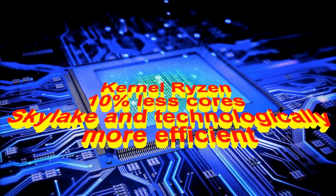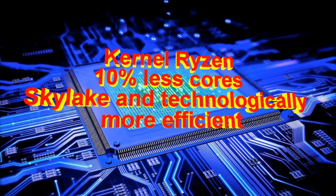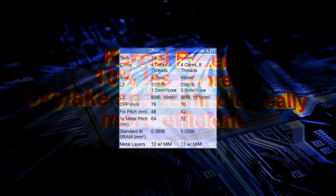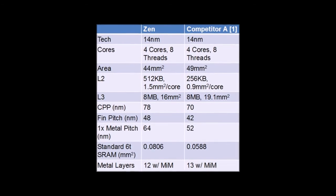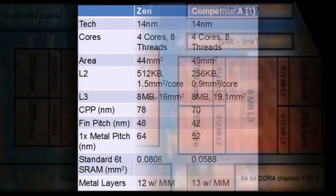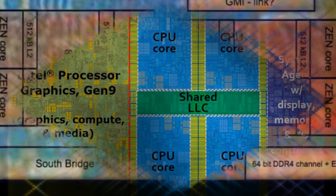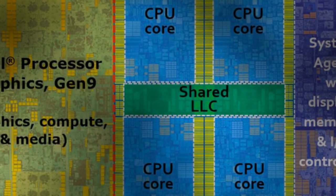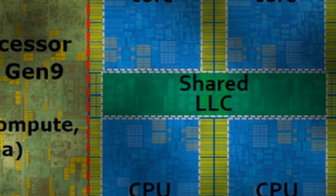The AMD Zen core is about 10% less coarse than Skylake and is technologically more efficient. Comparing Intel Skylake and AMD Kaby Lake processors head-to-head is not straightforward, because a significant part of the chip area is integrated graphics. At the ISSCC conference, AMD published official specifications allowing comparison of the x86 processor cores in Intel Skylake and AMD Zen, and the data shows Zen is about 10% smaller in die area than Skylake.